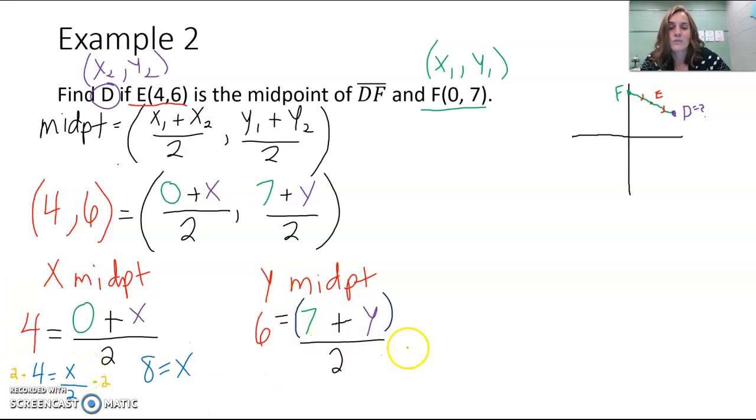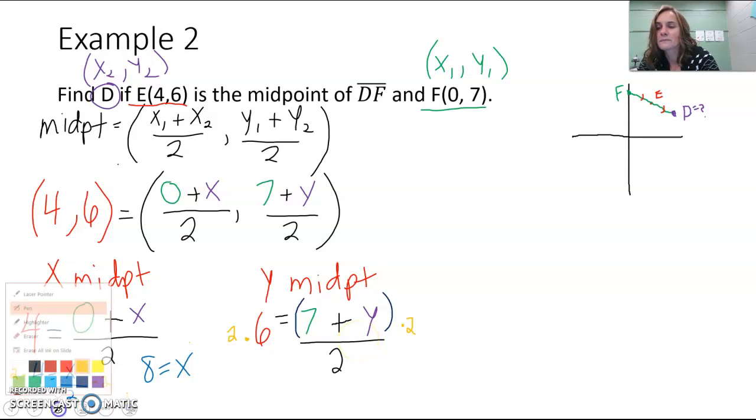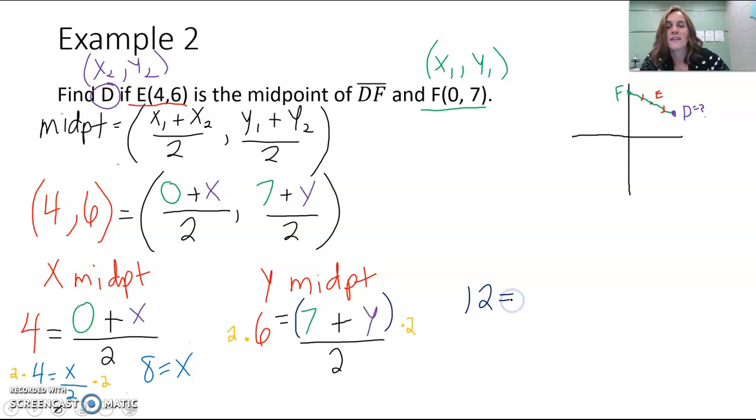So we're going to multiply by 2 first. Multiply both sides by 2. We could have done that on the first equation as well; you could have multiplied by 2 from the get-go and it would have been fine. 2 times 6 is 12, and then the 2 times the divided by 2 here cancels out, and you're left with just 7 plus y. And now because that division is gone, we just have 7 adding with y. We can subtract the 7 from both sides and we get 5. So 5 is equal to y.